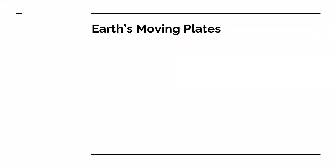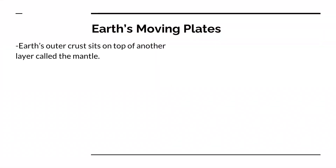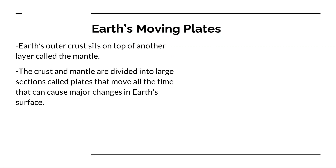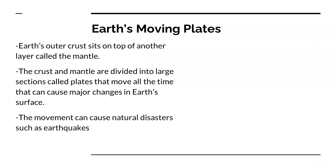So Earth has moving plates. Earth's outer crust sits on top of another layer called the mantle. The crust and the mantle are divided into really big sections called plates that move all the time and they can cause really big changes in Earth's surface.